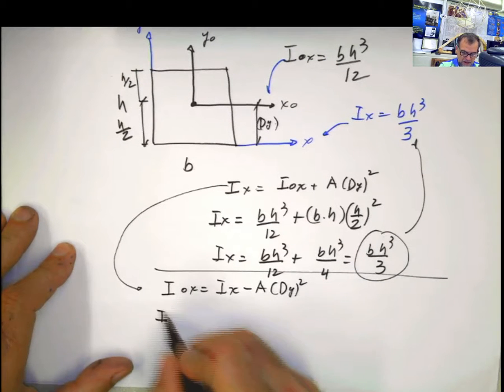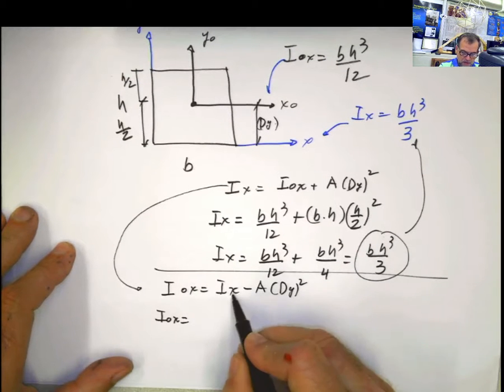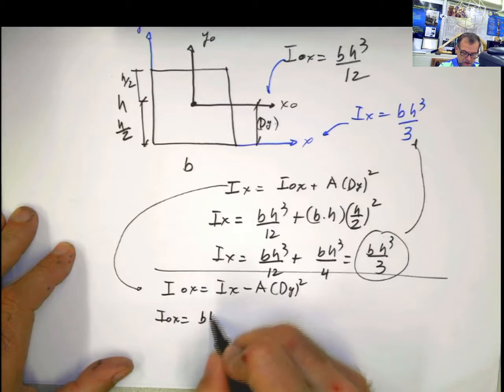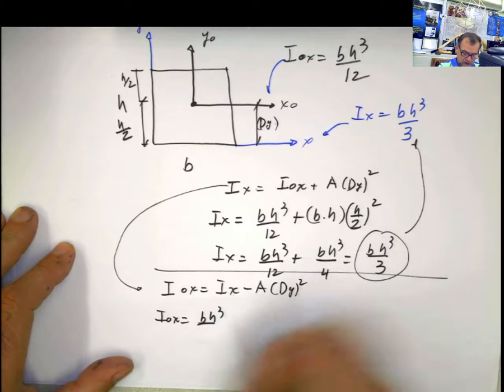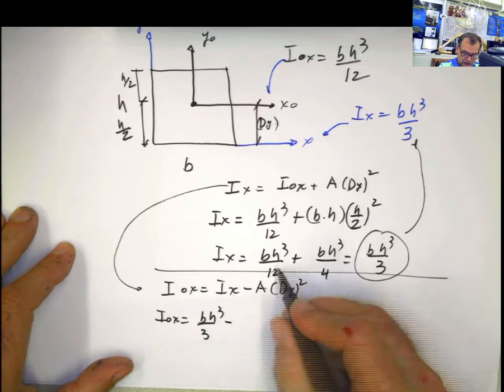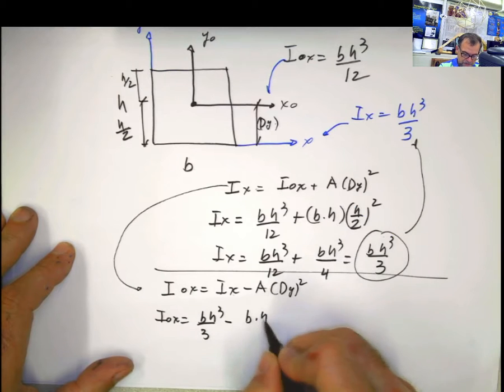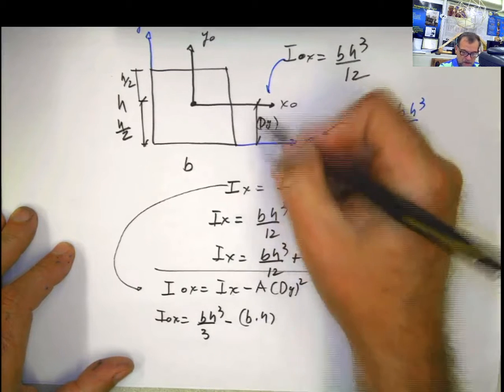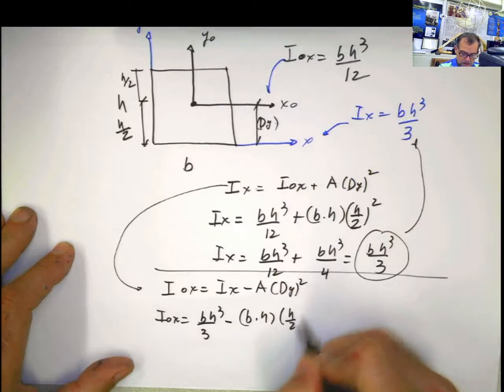Now, let's apply the same thing. I sub 0x equal I sub x is this one, bh cubed divided by 3, minus the area, b times h, multiplied by the distance in y squared, which is h divided by 2 squared.